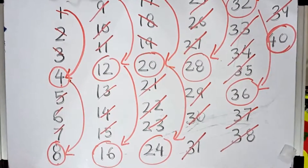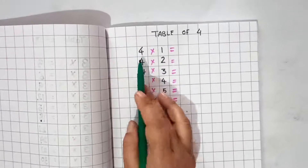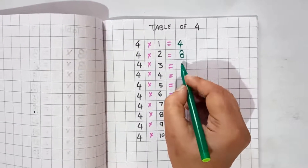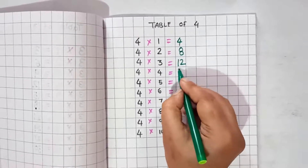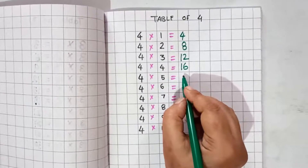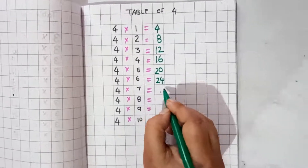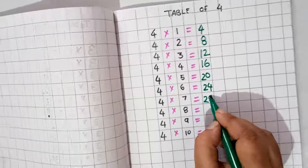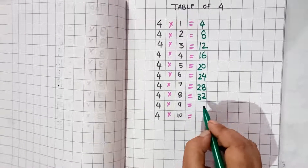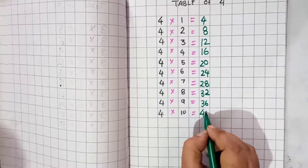Learn the table of number 4: 4 one's are 4. 4 two's are 8. 4 three's are 12. 4 four's are 16. 4 five's are 20. 4 six's are 24. 4 seven's are 28. 4 eight's are 32. 4 nine's are 36. 4 ten's are 40.